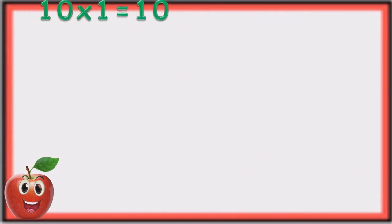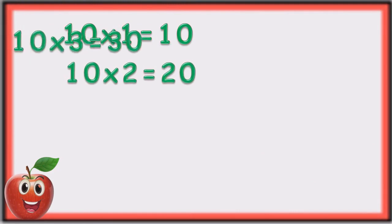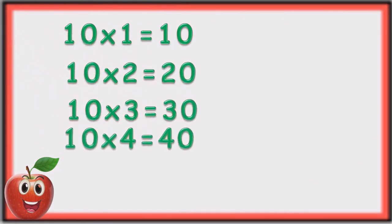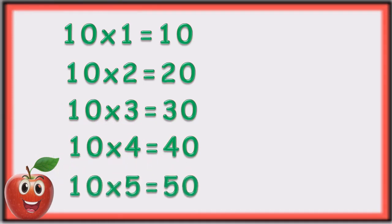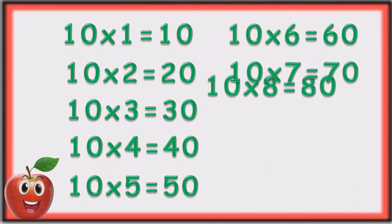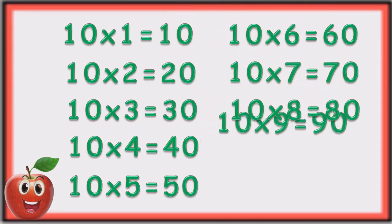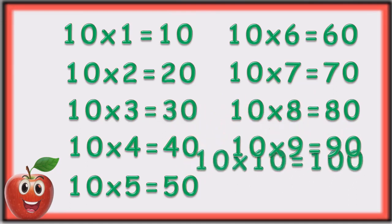Ten ones are ten. Ten twos are twenty. Ten threes are thirty. Ten fours are forty. Ten fives are fifty. Ten sixes are sixty. Ten sevens are seventy. Ten eights are eighty. Ten nines are ninety. Ten tens are one hundred.